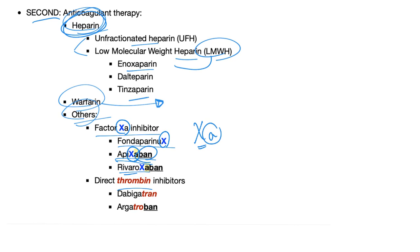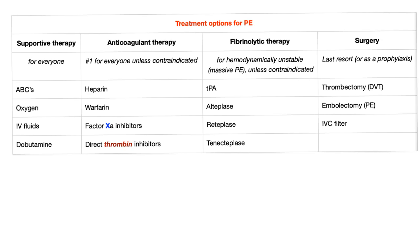Direct thrombin inhibitors will have the word 'thromb' or something similar in their name. Dabigatran — 'tran' sounds like thrombin. Argatroban — 'troban' again references thrombin. These are the direct thrombin inhibitors.